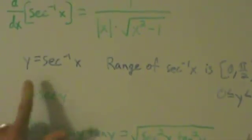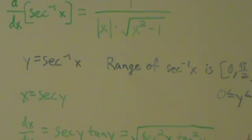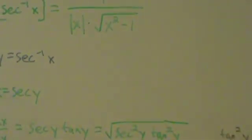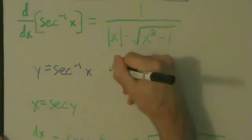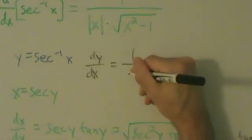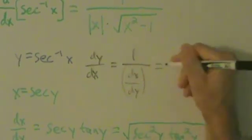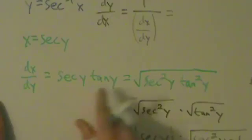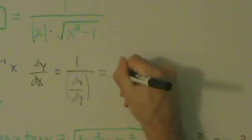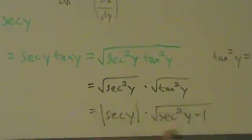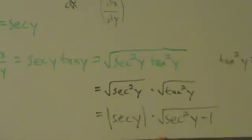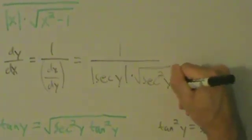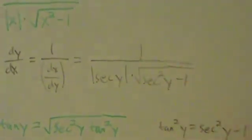Now we apply the inverse function theorem. Since y equals the inverse secant of x, dy/dx equals 1 divided by dx/dy. We found that dx/dy equals secant y tangent y, which we algebraically manipulated to get the absolute value of secant y times the square root of secant squared y minus 1. So dy/dx equals 1 over that entire expression.